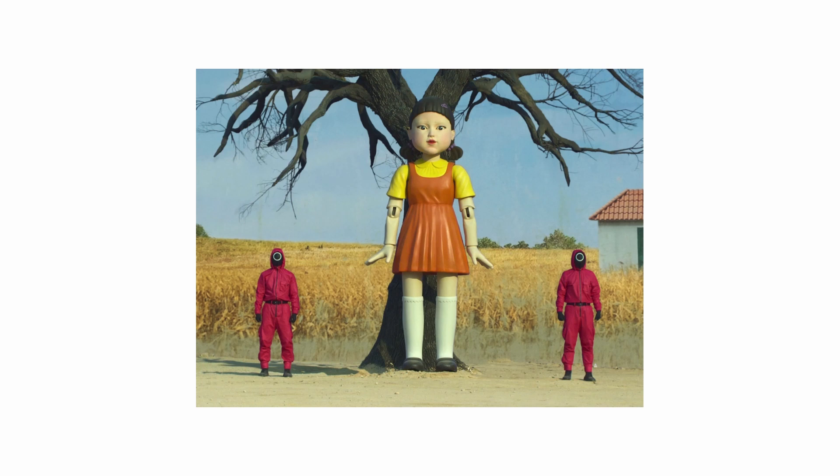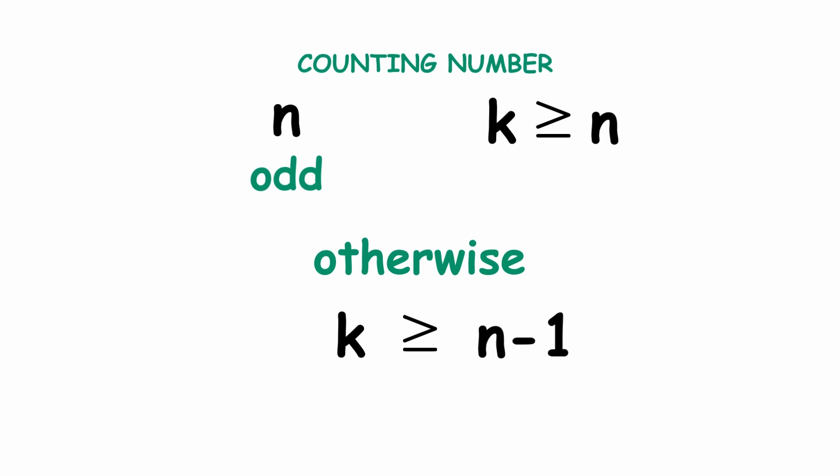Now, for a game, let's choose a counting number n. If n is odd, choose another counting number k greater than or equal to n. Otherwise, choose k to be greater than or equal to n-1. Then, let's draw a k-regular graph with two n vertices.